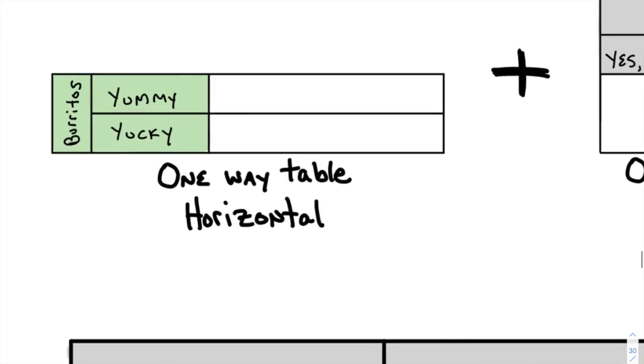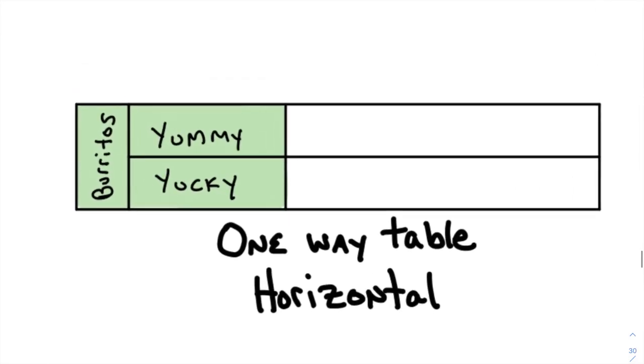The idea behind a two-way frequency table is this. Imagine you decided, for whatever reason, to survey a group of students in your cafeteria, in your classroom, on your sports team. And you ask them two questions. Do you like burritos or don't you?